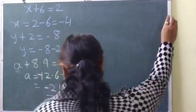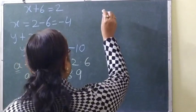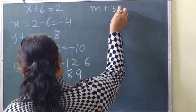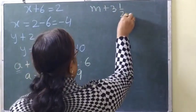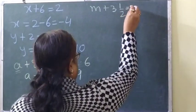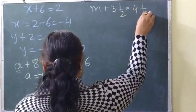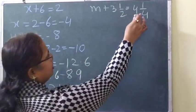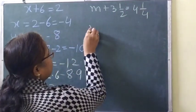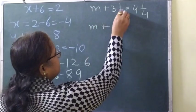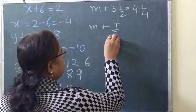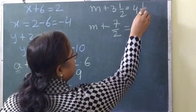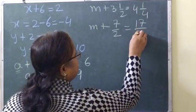Next question: if m plus 3 and 1 by 2 is equal to 4 and 1 by 4, how will we solve? Converting to improper fractions: m plus 7 by 2 equals 17 by 4. So m will be equal to 17 by 4 minus 7 by 2. We take LCM of 4.